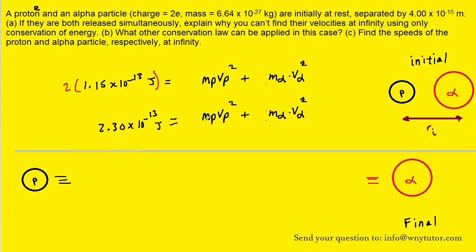We know the mass of a proton and the mass of the alpha particle was given, but we don't know the speed of the proton or the speed of the alpha particle. So we have one equation with two unknowns, and this is why conservation of energy alone is not enough — we're going to need another equation.